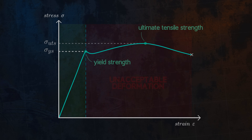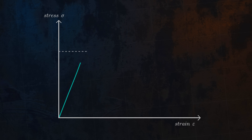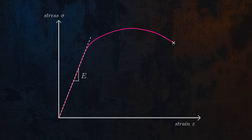For some materials, the transition from elastic to plastic deformation is not clearly defined. In these cases, the yield strength can be defined using the 0.2% offset method. This involves drawing a line with the slope equal to Young's modulus, and shifting it 0.2% to the right on the stress-strain curve.